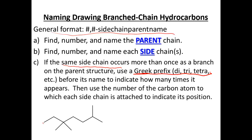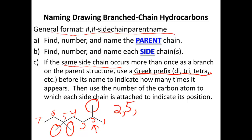An example: we have a seven-carbon chain, so we have heptane. Notice we have three methyl groups. I numbered from the opposite end to get the smallest numbers. Those three methyl groups are located at positions two, five, and five. Since we have three of them, separated by a hyphen, it's trimethyl, and then our parent chain heptane. So 2,5,5-trimethylheptane is the name.